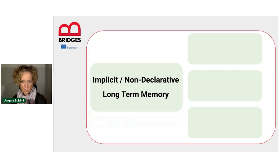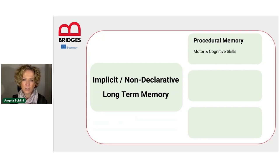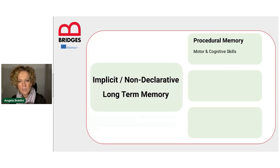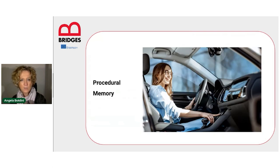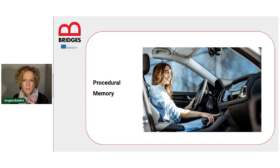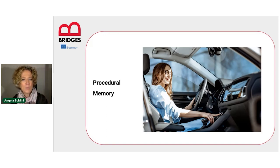Our first example of implicit memory is procedural memory. With procedural memory, we indicate memory mainly for motor skills, such as riding a bike, driving a car, or doing any automatic mechanic procedure that we have learned at some point in our life. For example, if I know how to drive a car, I get into the car, I start the engine, I put the car into gear — but I don't do all these things thinking 'so what do I have to do now?' We don't need to make a conscious effort to remember how to drive a car. It's simply something that we do automatically.